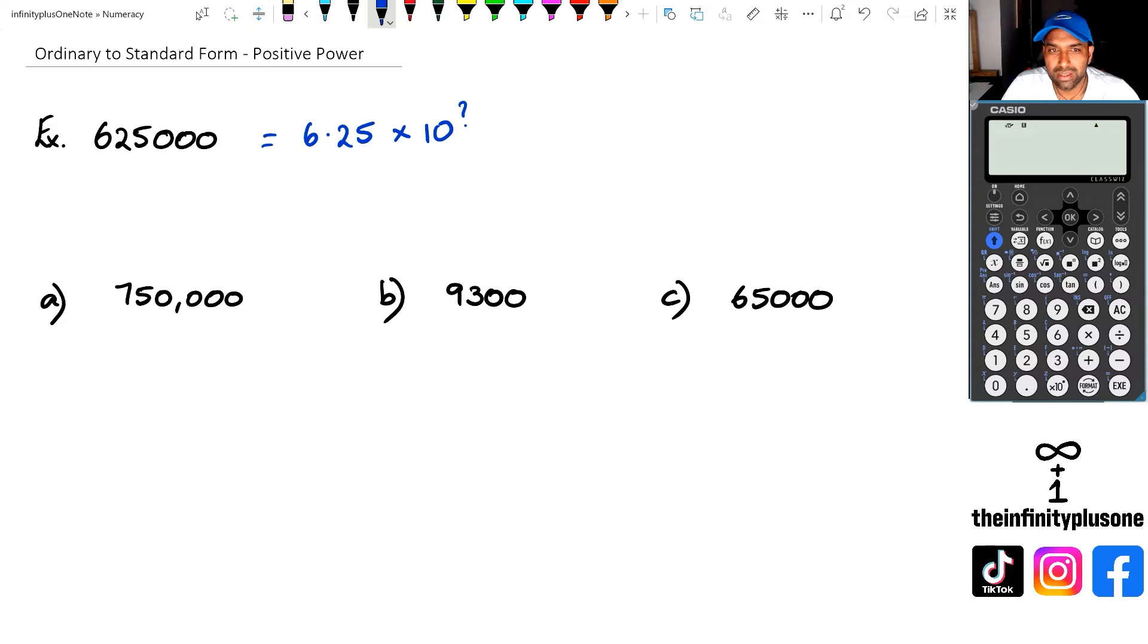Think about it like this - I'm going to do a quick example on the side here. If you take 625, we can write this as 6.25 times 100. Because 6.25 times 100 equals 625. But we also know that we can write 100 as 10 squared. So that's what we're going to do here.